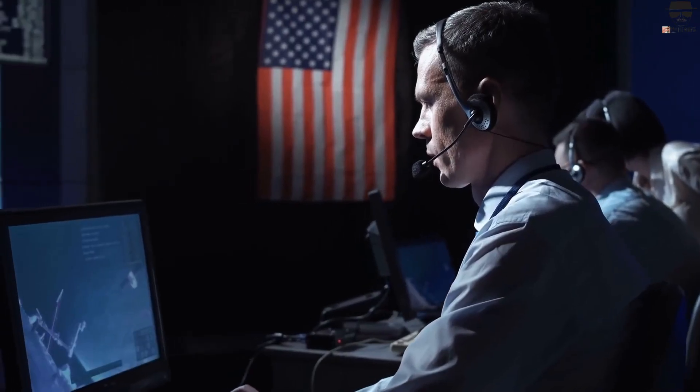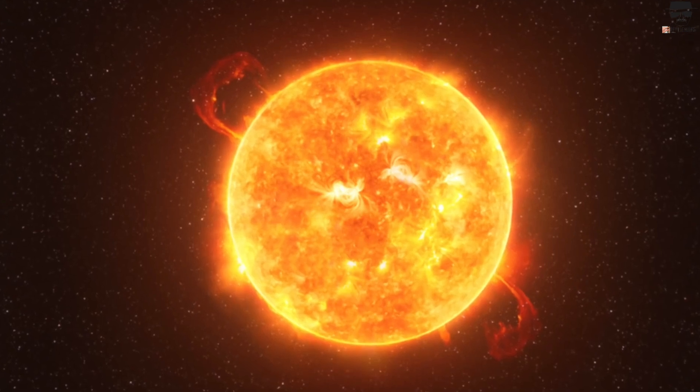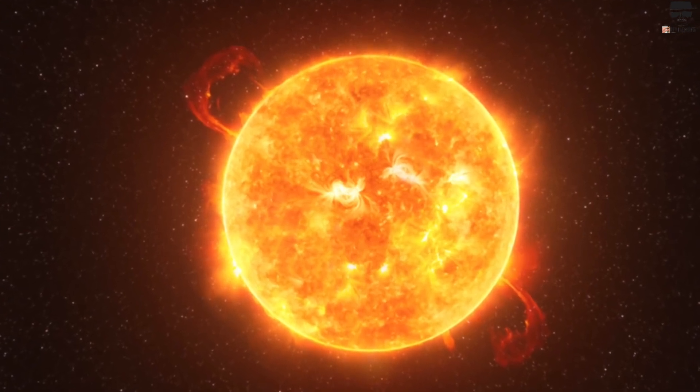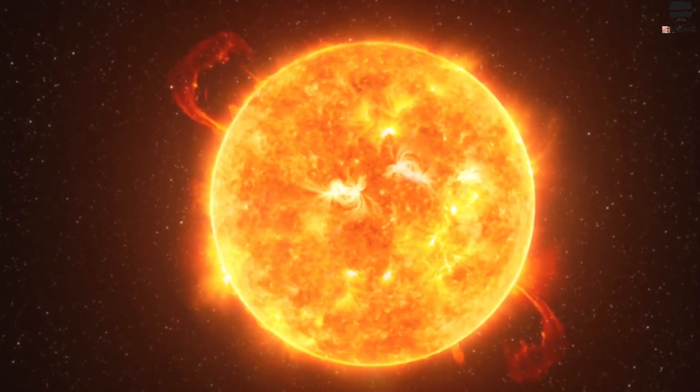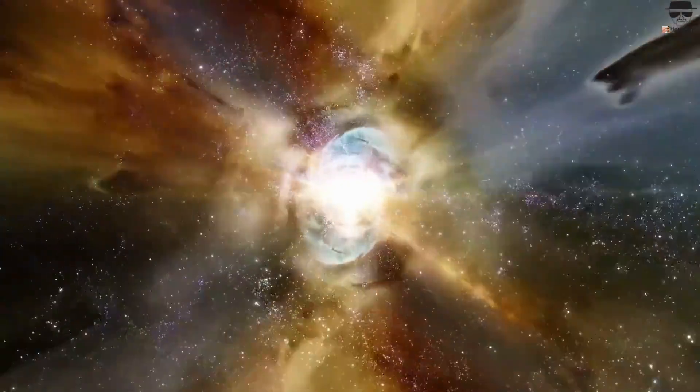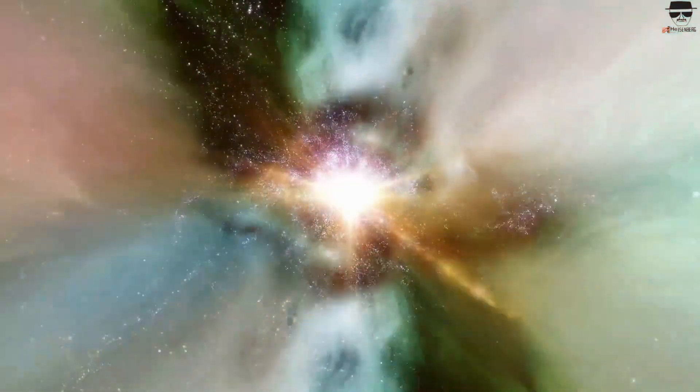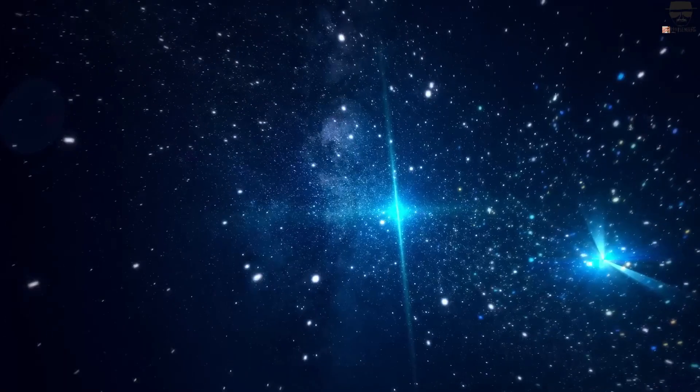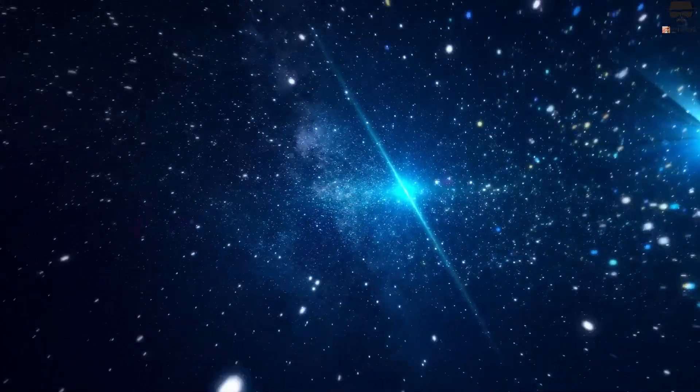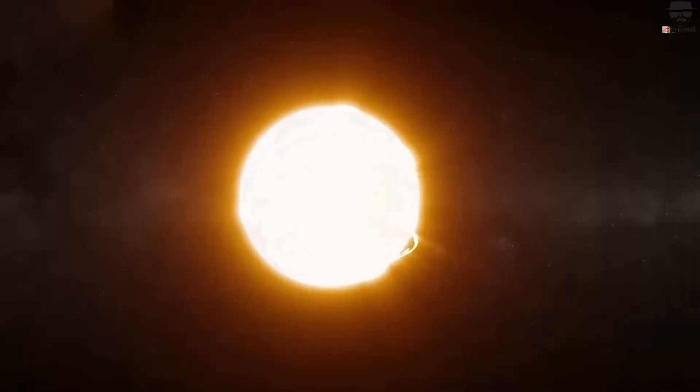According to experts, we're safe. Whenever the star explodes, the lethal radiation will scatter to such an extent that only a weak portion will reach us. A supernova would have to occur within a few dozen light-years to really harm us. Some scientists believe that the UV layer of the Earth could change for a time due to the neutrinos and gravitational waves.